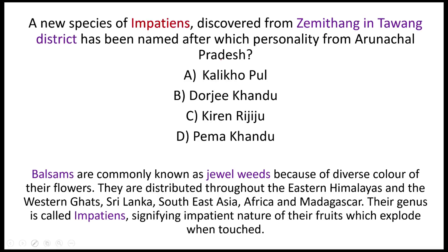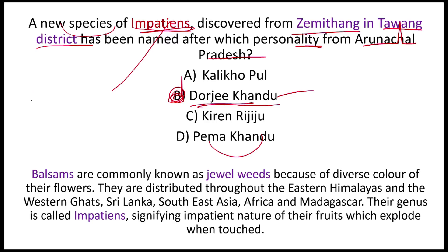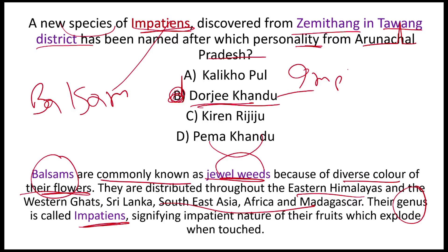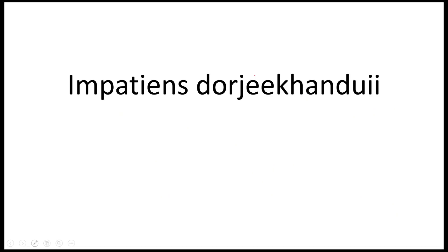A new species of Impatiens (balsam) was discovered from Zamithang, Tawang district, Arunachal Pradesh. It is named Impatiens dorjikhandui after Dorji Khandu, father of current Arunachal Pradesh Chief Minister Pema Khandu. Balsams are called jewelweeds due to their beautiful flower colors. They are distributed throughout the Eastern Himalayas, Western Ghats, Africa, and Sri Lanka. Their genus is called Impatiens because touching their fruit causes it to explode.